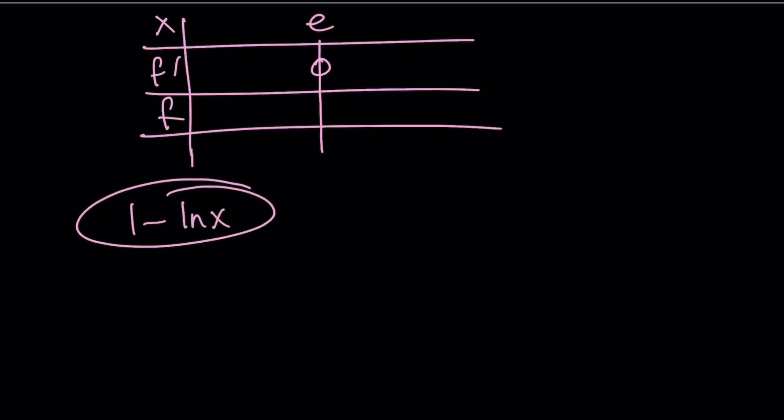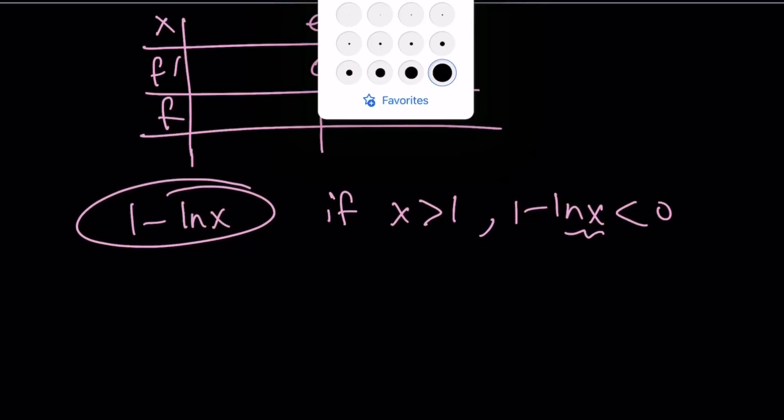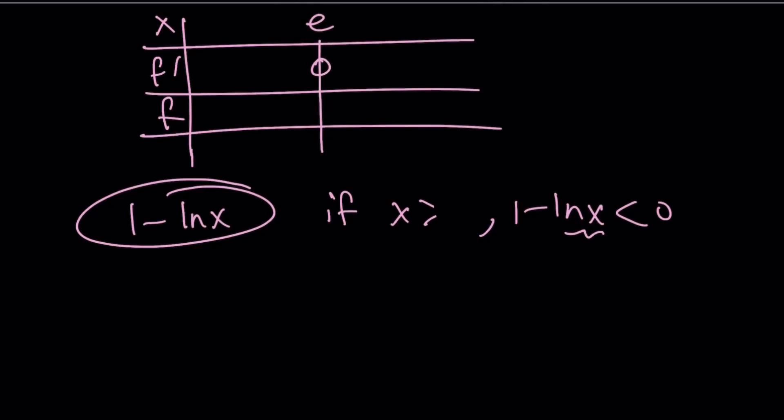And from here, you can safely say that if x is greater than e, then 1 minus ln x is going to be negative because ln x is going to be greater than 1. So, to the right of, I should probably say e, not 1. So, if x is greater than e, ln e is going to be greater than 1, so the difference will be negative. So, we have a negative sign here and we have a positive sign here. Great.